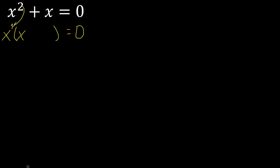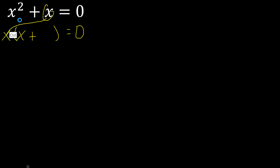2 minus 1 is 1. Here, because 1 plus 1 is 2. Perfect, plus x is here. Here is 1, therefore 1 is here. x multiplied by 1 is x.